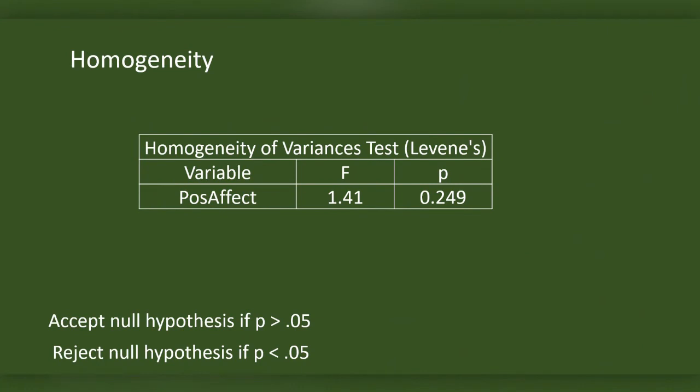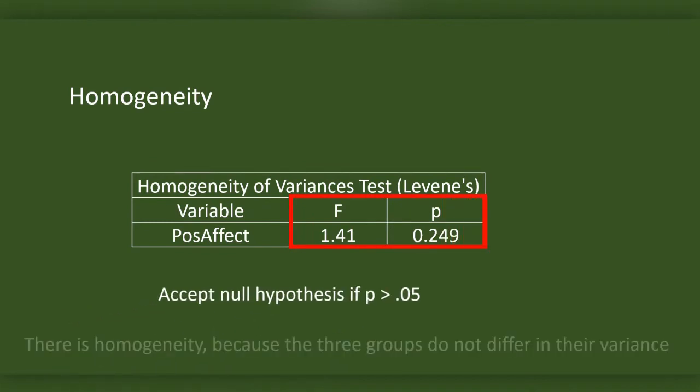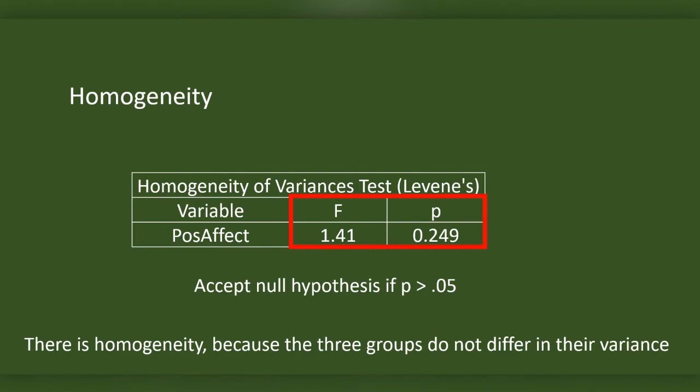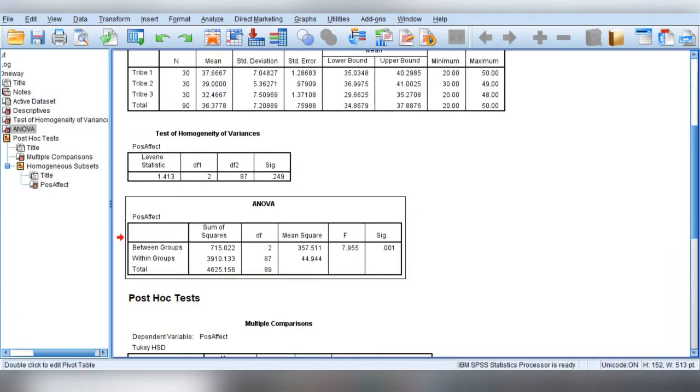This is the table of Levene's test on homogeneity or equality of variance. Levene's F score is 1.41 and p is 0.249, which is greater than 0.05. That means there is no significant difference between the groups in their variation of the distribution from the mean, hence there is a homogeneity of variance or equality of variance.